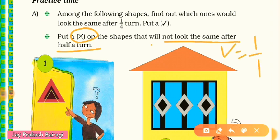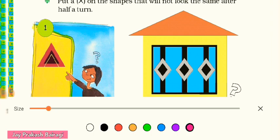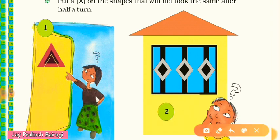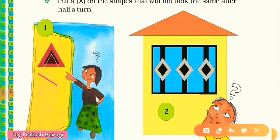The first picture is a triangular shape. In one fourth turn it will come to the right side like this — it does not look the same, so no tick. In half turn it will look like this — also not the same as the original. So here you put a cross, because cross means not looking the same in half turn.